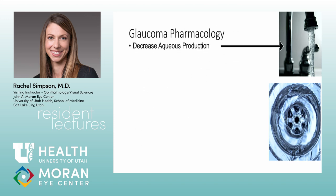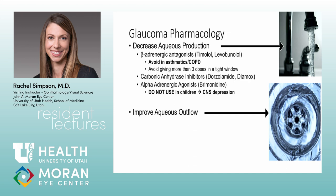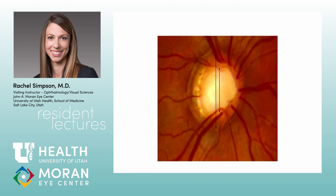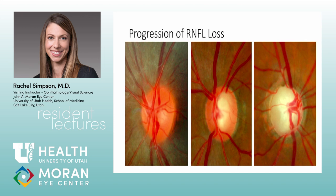For these open-angle glaucoma patients, you'll start them on drops. Your options are decreasing aqueous production or improving outflow. The main categories: beta-blockers, carbonic anhydrase inhibitors, alpha-agonists, uveoscleral agents like prostaglandins, and the newest class — the ROCK/Rho-kinase inhibitors, Rhopressa and Rocklatan. A patient whose glaucoma was grossly mismanaged for years by someone masquerading as an eye doctor was what got me into advocacy — everyone should go to the Mid-Year Forum if they get the chance.